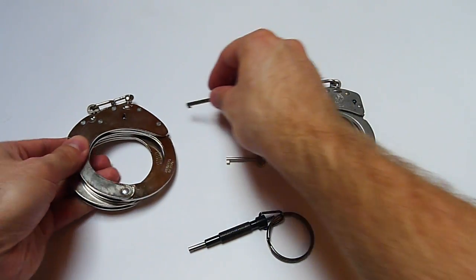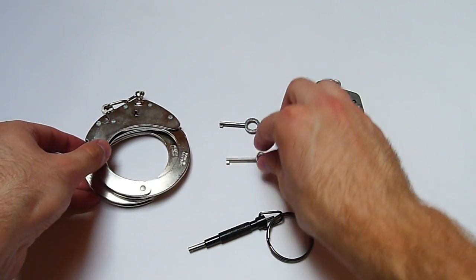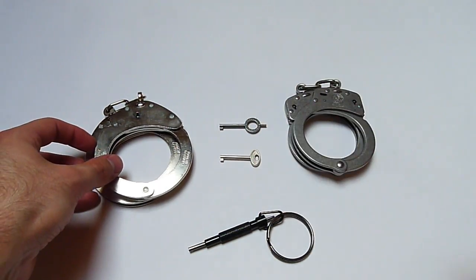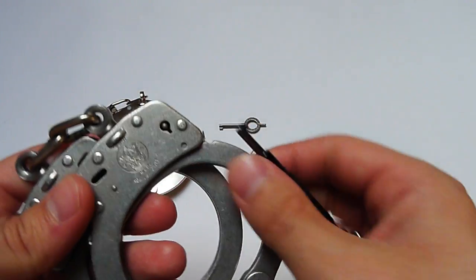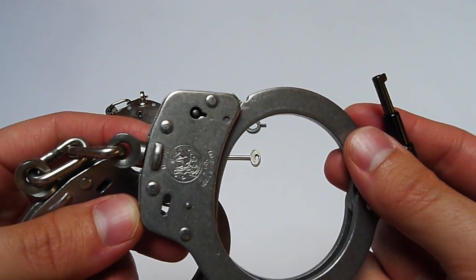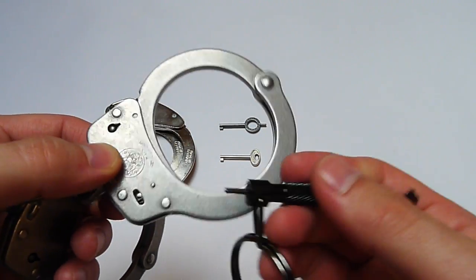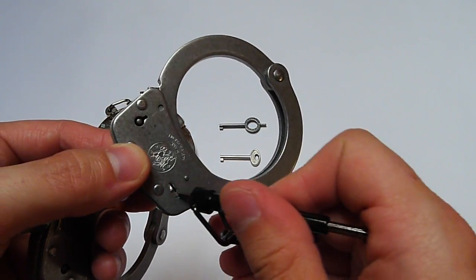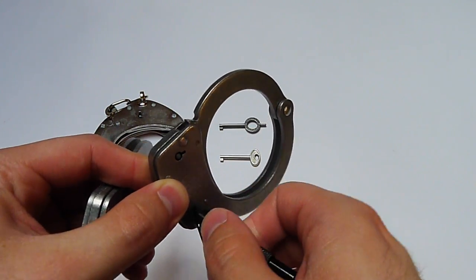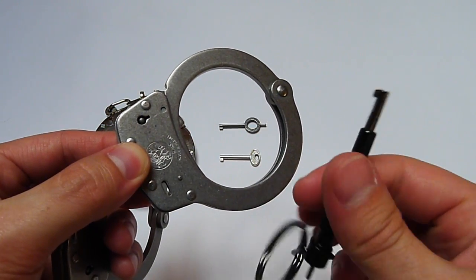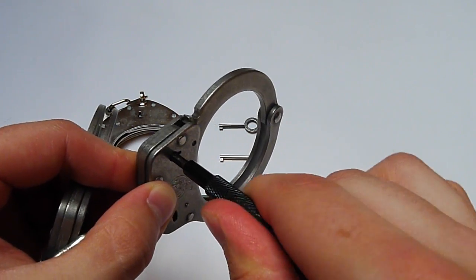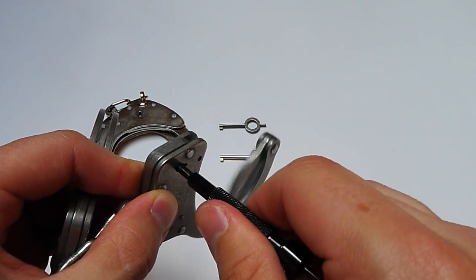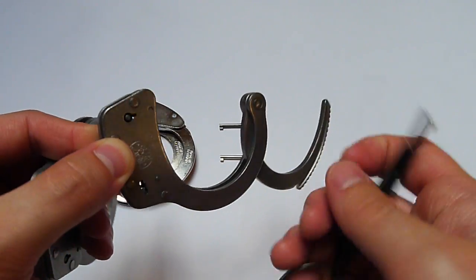So does it work with our universal handcuff key? Yes, it does work, of course, and let's demonstrate that now. First, the Smith & Wesson handcuffs. We will engage the double lock just in case, and now use the universal key, disengage the double lock, open the handcuff. Works perfectly.